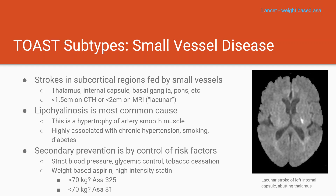Secondary prevention for this group focuses on controlling those risk factors. These patients are going to get strict blood pressure control, smoking cessation education, and we always place them on a high-intensity statin and weight-based aspirin. Weight-based aspirin is a newer concept gaining a lot of steam recently, derived from a Lancet meta-analysis showing that stroke patients over 70 kilos have better outcomes on a larger dose. So patients over 70 kilos get 325 milligrams of aspirin, while others stay on the traditional 81 milligrams.